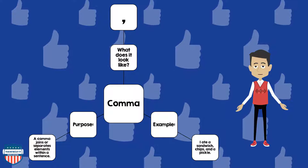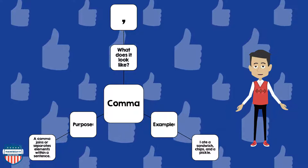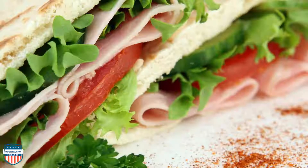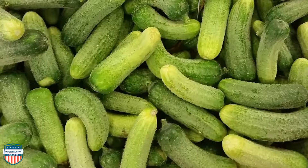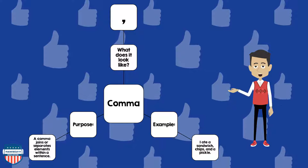Next, let's talk about the comma. The comma is like an upside-down apostrophe — that's what it looks like. An example of a comma in use: I ate a sandwich, chips, and a pickle. What is the purpose of a comma? A comma joins or separates elements within a text.